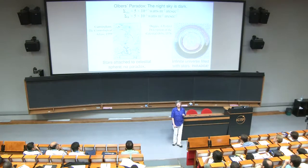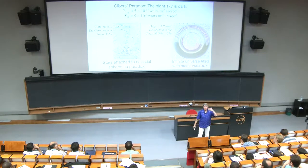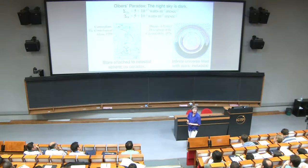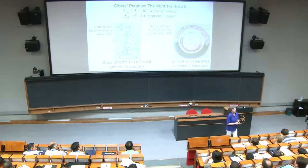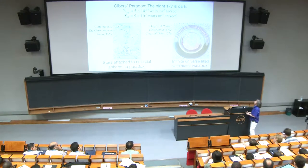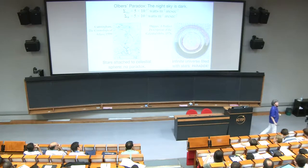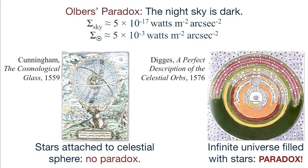When I say the night sky is dark, I can quantify that. Go above the Earth's atmosphere, pick out a seemingly black patch of sky where there are no bright stars, and the flux of light you receive comes to about 5 times 10 to the minus 17 watts per square meter per square arc second. Compare that to the brightness of the sun: the surface brightness of the sun is about 5 times 10 to the minus 3 watts per square meter per square arc second. So the night sky is about 14 orders of magnitude lower than the surface brightness of the sun.